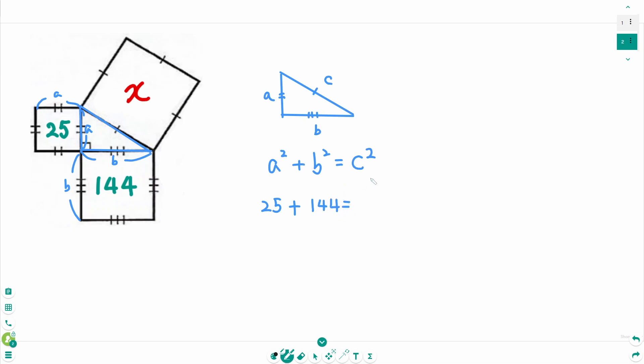And the last one: C squared means this part is C, area of the large square, which is X. So X equals 169.